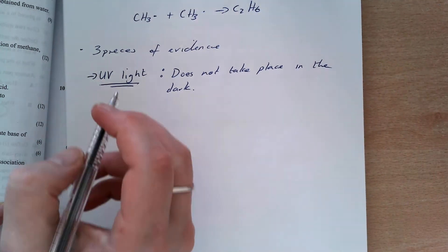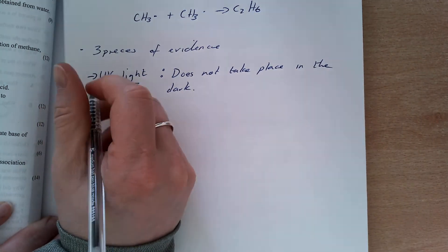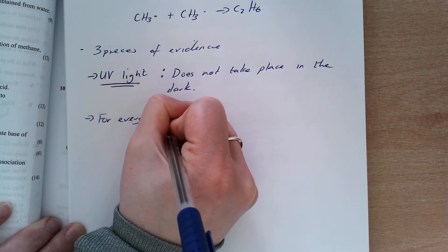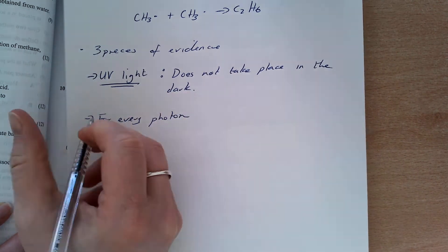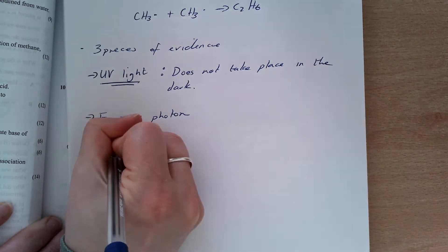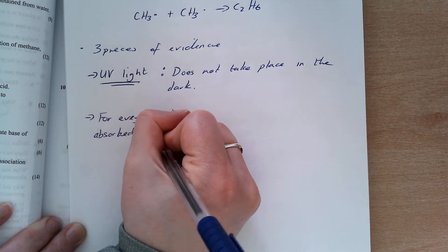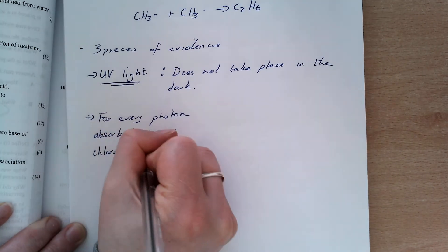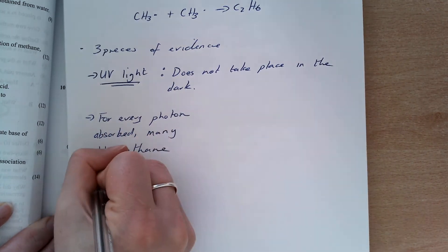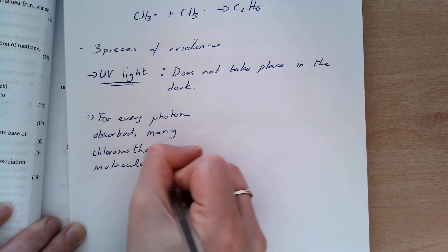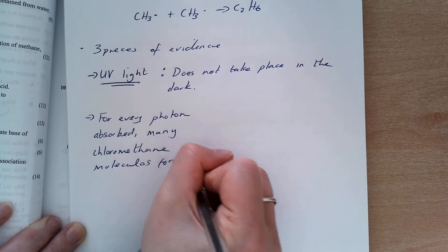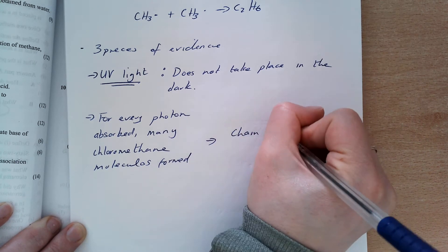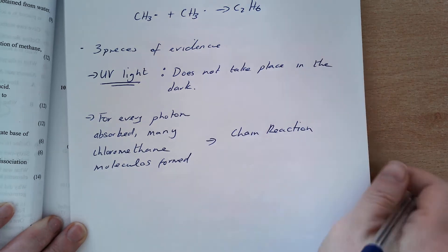The second piece of evidence that we have is that for every photon absorbed, so for every energy absorbed, many chloro-methane molecules are formed. And this shows that we have a chain reaction.